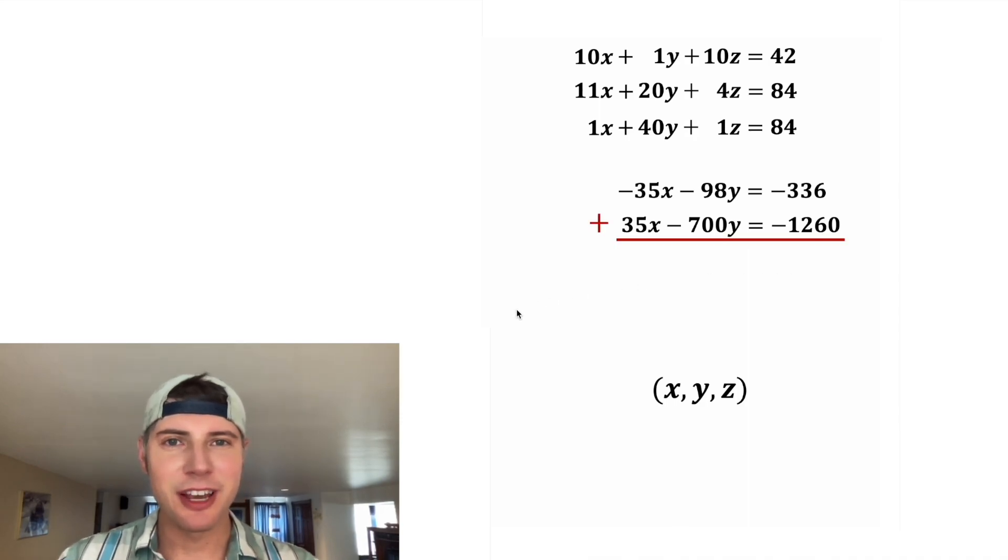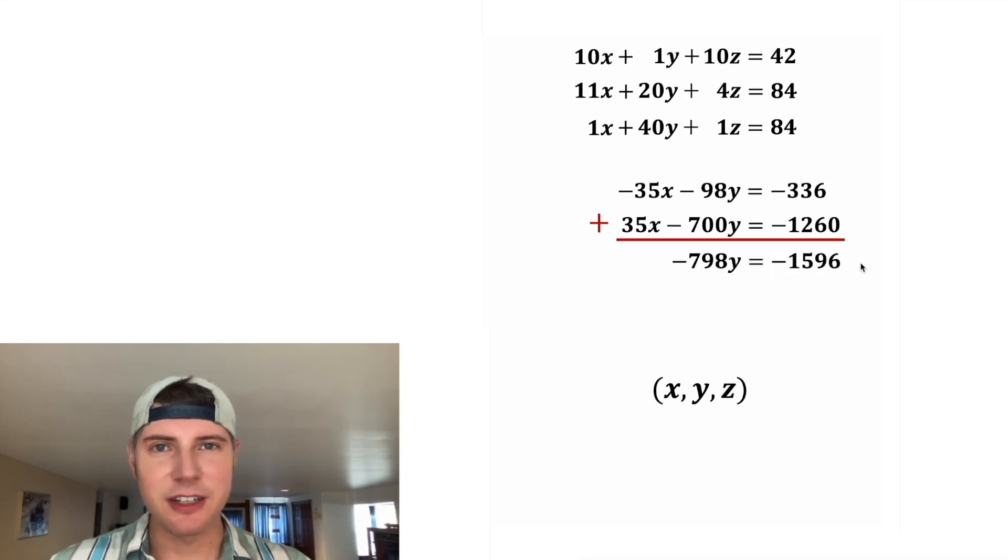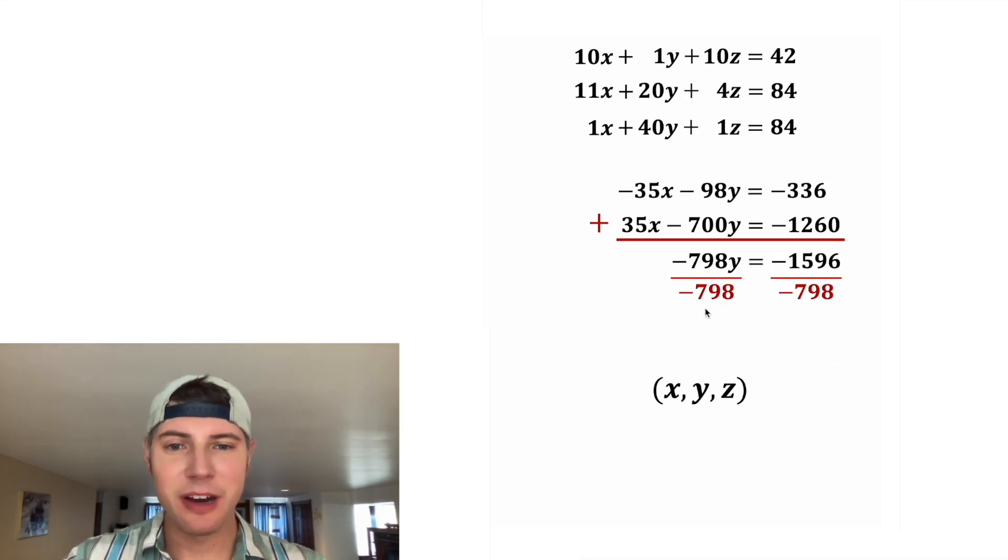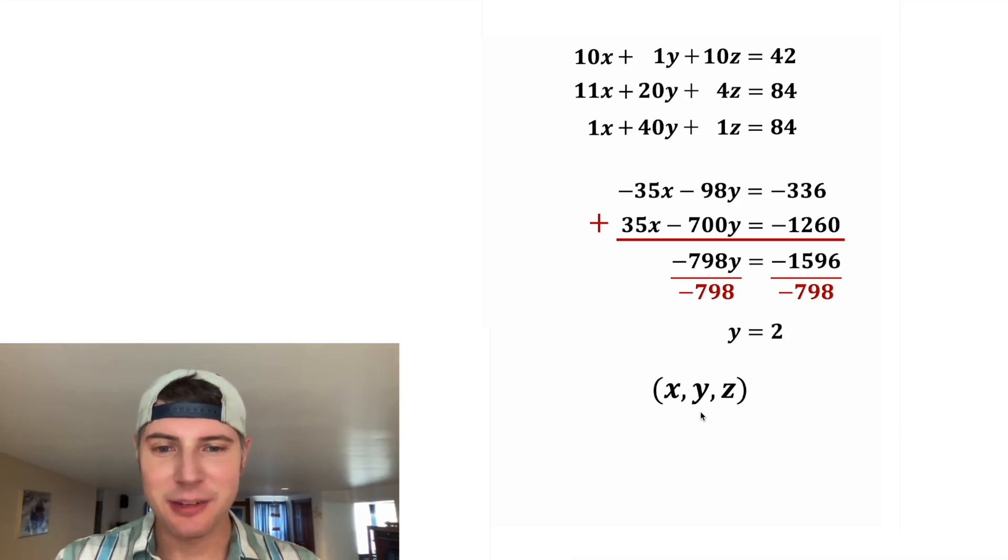Now we're ready to add these two rows together. The negative 35 and 35 cancel each other out. Negative 98 minus 700 is going to be negative 798, and negative 336 minus 1260 is negative 1596. To solve for y, we can divide both sides by negative 798, and this gives us y is equal to 2. So we can update the y in our solution set to be 2.